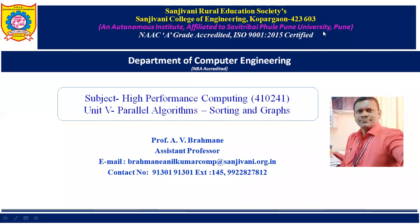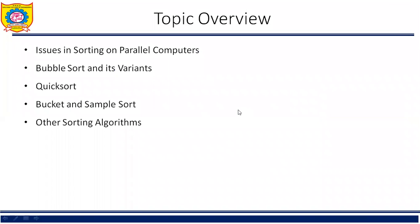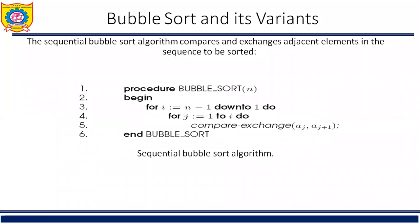Hello students. In this video we will start the second article of unit number 5. The name of the article is bubble sort and its variant. What we are going to learn under bubble sort and its variant — our main intention here is to learn the parallelization. We want to parallelize the sorting algorithms, so bubble sort is the first algorithm that we will try to parallelize.